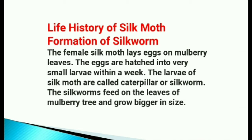Life history of silk moth — formation of silk worm. The female silk moth lays eggs on mulberry leaves. The eggs are hatched into very small larvae within a week. The larvae of silk moth are called caterpillars or silkworms. The silkworms feed on the leaves of the mulberry tree and grow bigger in size.